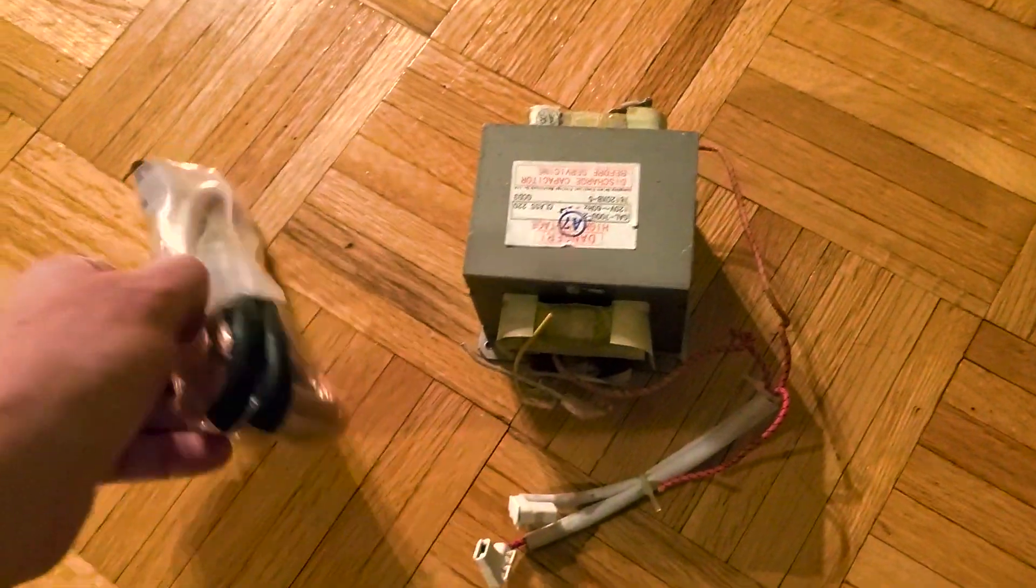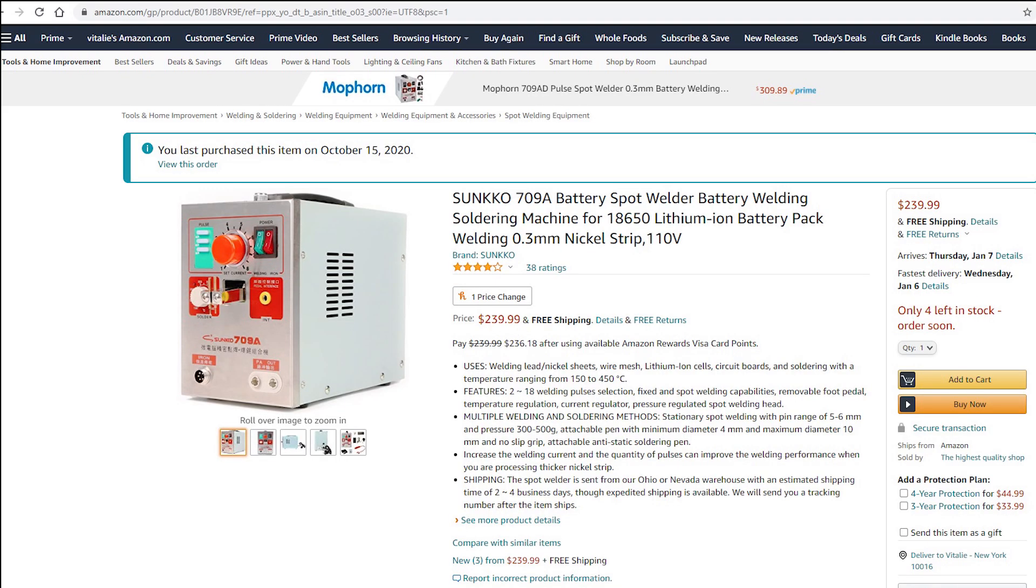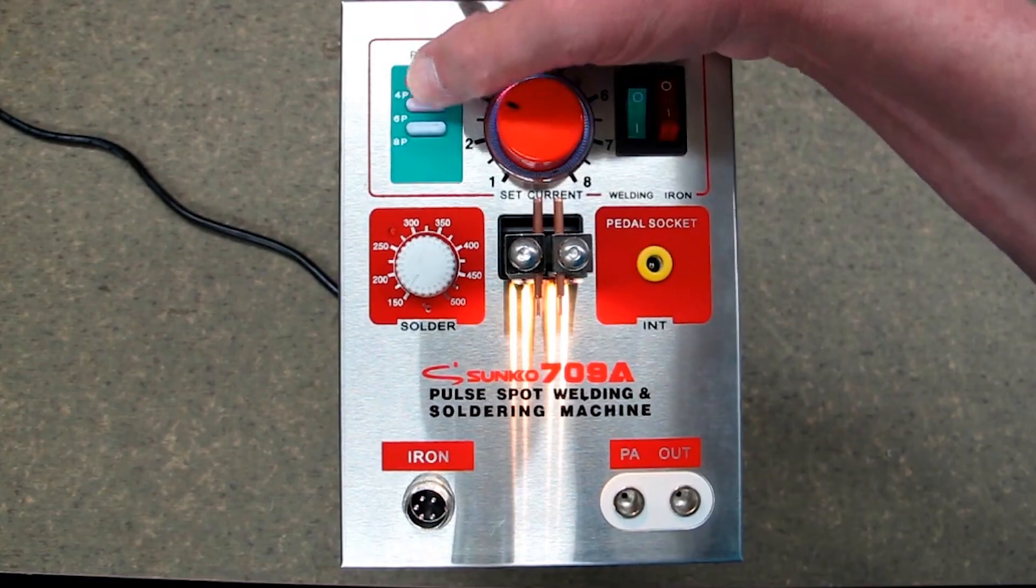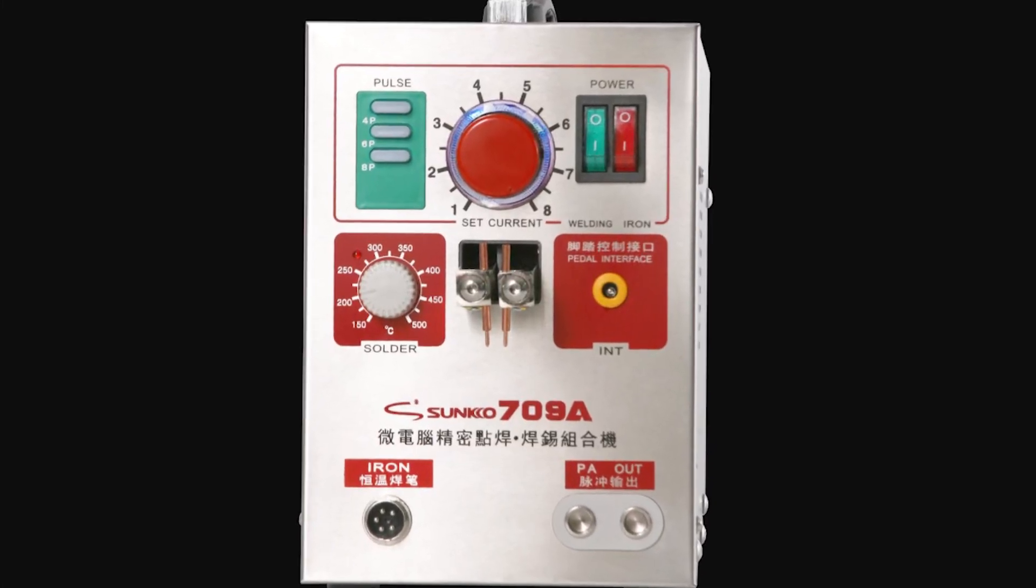I found a broken microwave and removed the transformer but never ended up building it. I ordered the Sunco 709 and it's a great unit. It did the job great but it took so much space and was awkward to move around.